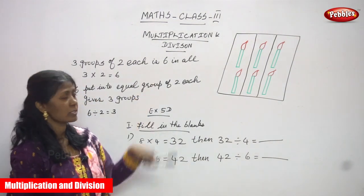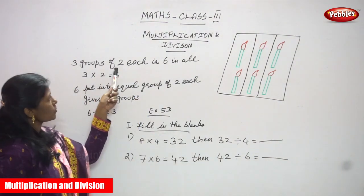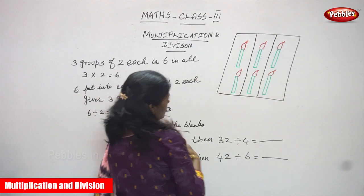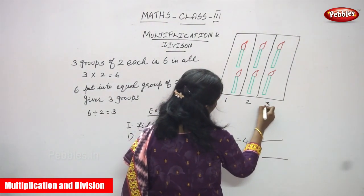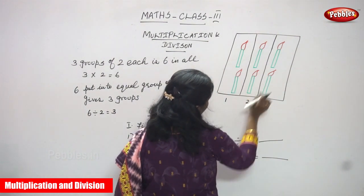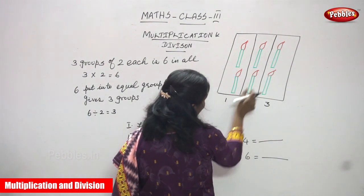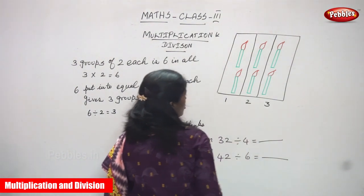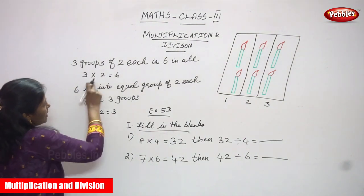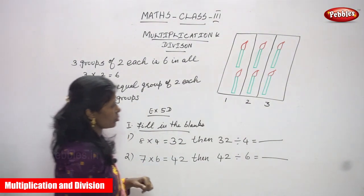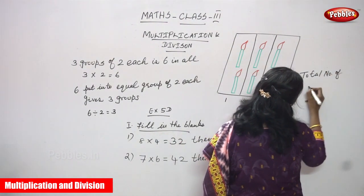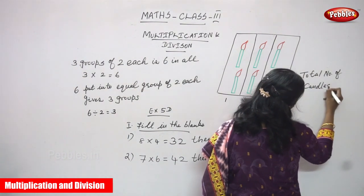Now we are going to see multiplication and division combined together. Three groups of two each, and six in all. Three into six — see how many groups: this is one group, this is a second group, this is a third group. In each group, two candles are there. So three groups, in each group two candles — three into two you can get six. Total number of candles is six.